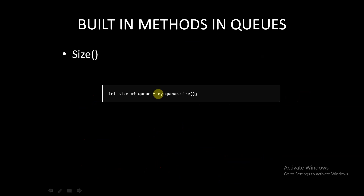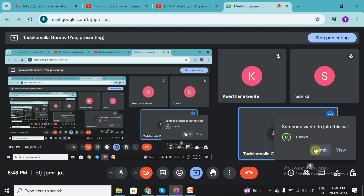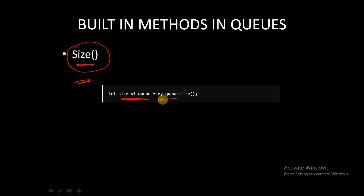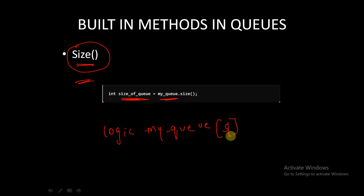Now let's look at some built-in methods available for queues. The first method is size(). With the help of this function, we can get the size of the queue. For example, if we have declared a queue logic my_queue[$] somewhere, and we want to know its size, we use the function dot size() — my_queue.size(). This returns the current size of the queue.